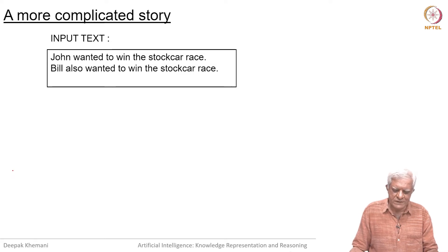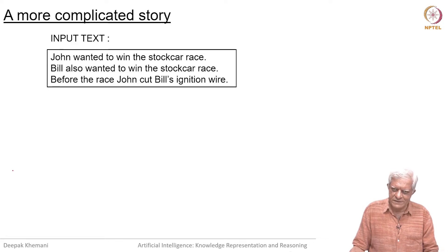Bill also wanted to win the stock car race. So, before the race, John cut Bill's ignition wire. It is complicated because you have to figure out what is happening there.